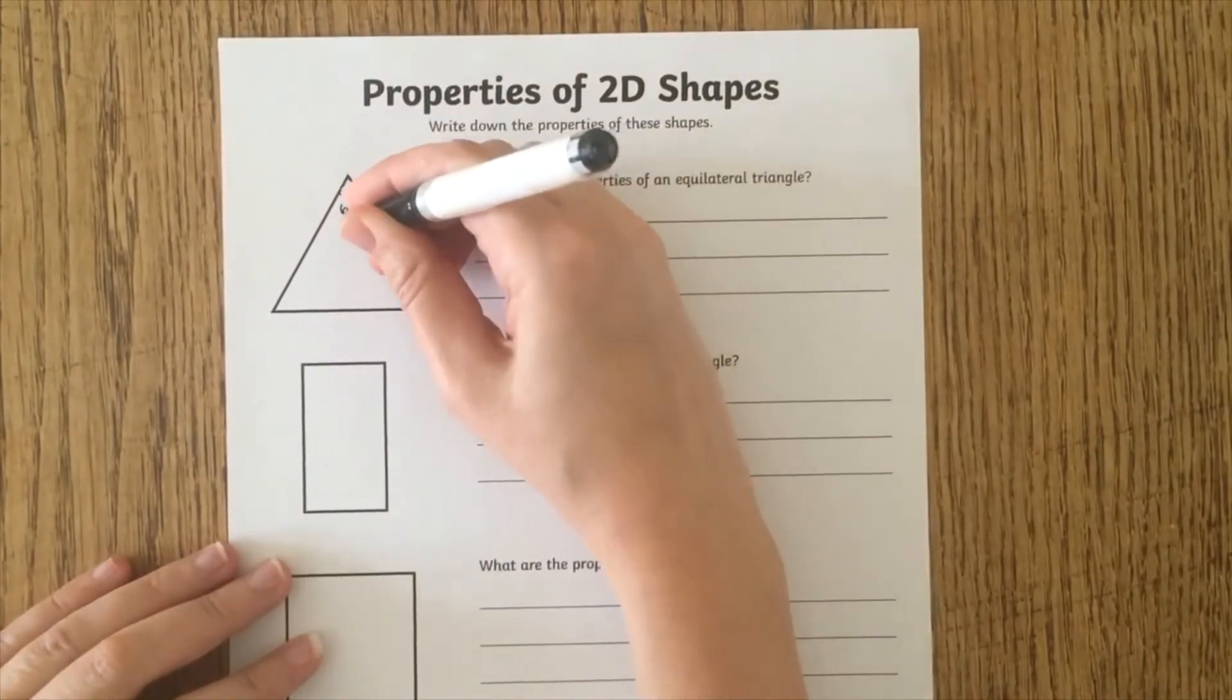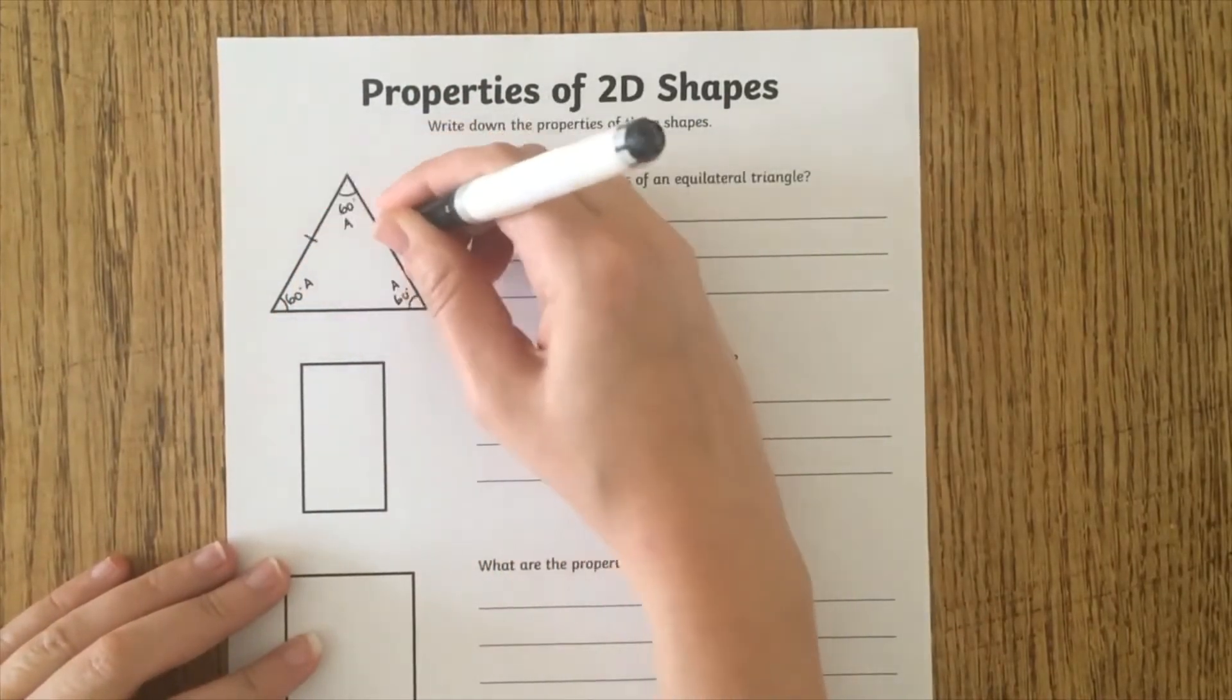First, ask learners to annotate the diagram and write as many properties of the shape as possible.